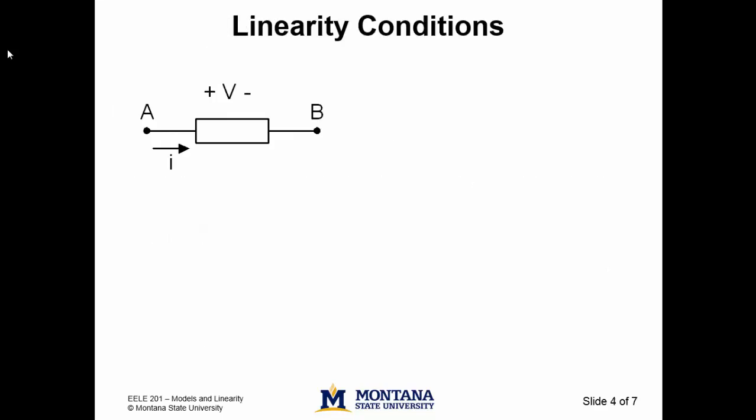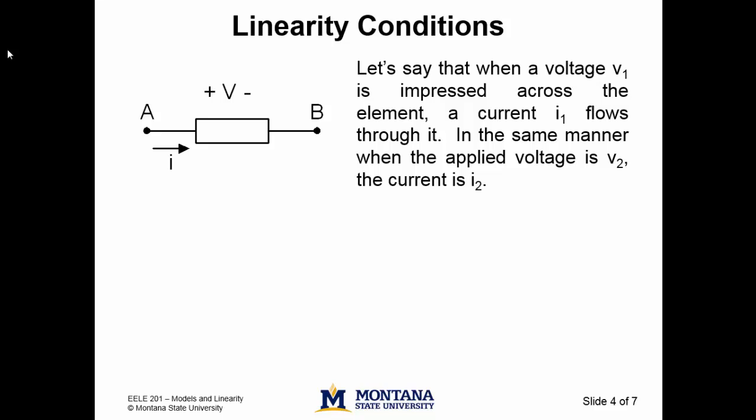On this slide, we will look at the general conditions under which a circuit element may be considered linear. To do this, let's return to the generic circuit element that has a voltage V across it and a current I through it. Imagine that if V equals some V1, then the associated current I equals I1. Imagine again that something has changed in the circuit to give a new voltage across the element, say V2. Well, if V equals V2, then I will equal some I2. To be a linear element, the element must satisfy both the superposition condition and the homogeneity condition.